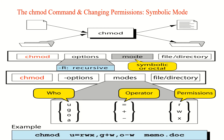Here we discuss changing the permission of a file. In Unix, a file or directory is created with a default set of permissions. Generally, the default set write-protects a file from all except the owner. The permission of a file can be changed using the chmod command. The chmod (change mode) command is used to set the permissions of one or more files for all three categories: user, group, and others.